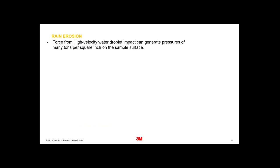The next topic is rain erosion — a different type of erosion with a different mechanism. What happens is the force from high-velocity water droplets creates a pressure wave — quite a few tons per square inch on the sample surface. These then create stresses within the substrate which cause fatigue and eventually brittleness.